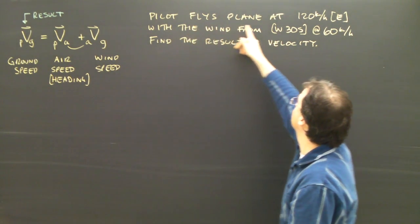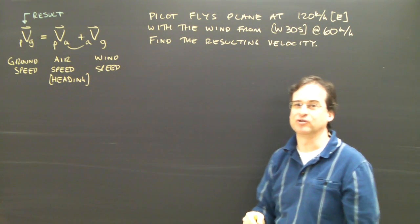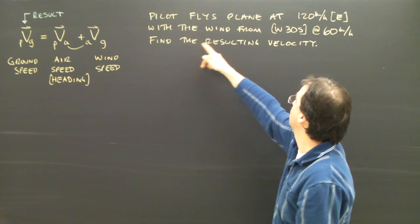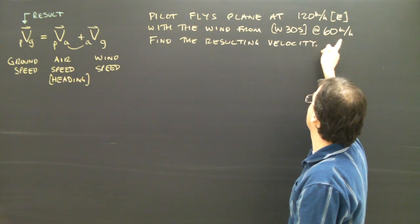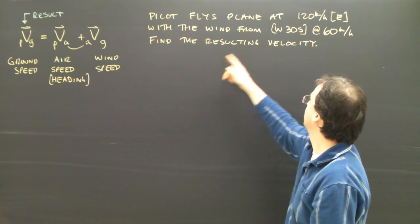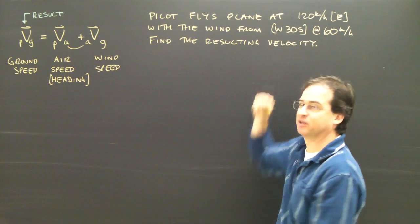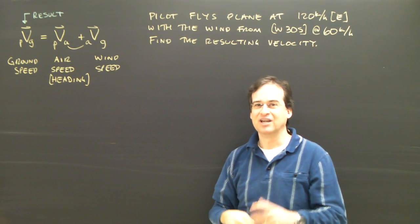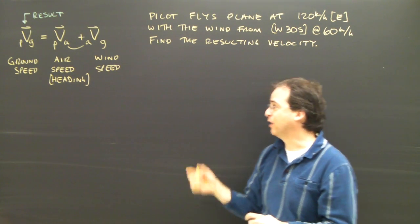So the question I have is, the pilot wants to fly at 120 kilometers per hour. With the wind from the west 30 degrees south at 60 kilometers per hour, find the resulting velocity. So this is what the pilot is doing, but the wind is pushing the pilot off course. And we want to find out which way the pilot goes.